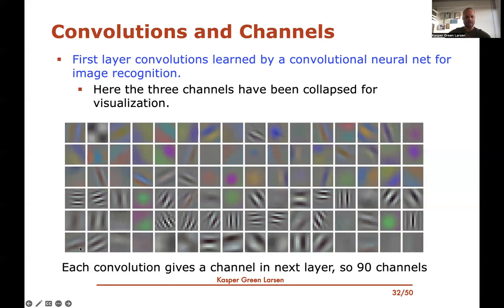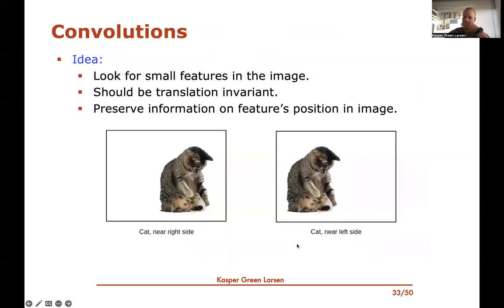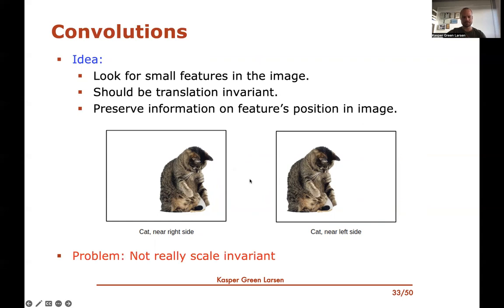Each convolution gives one channel in the next layer. The network shown here has 90 channels in the next layer, so further convolutions would be k×k×90 tensors. These convolutions look for small features in the image, are translation invariant by sliding across the image, and preserve information about where features are located — outputting values at the same position in the image where the feature was found.